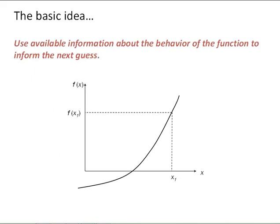Here's the basic idea. Newton-Raphson takes advantage of some available information about the behavior of the function to inform the next guess. Namely, we're going to use the slope of the function at the current guess to determine our next guess.